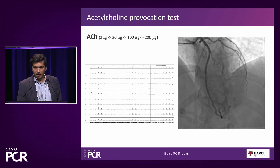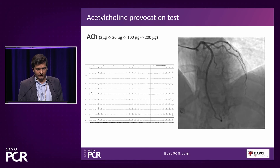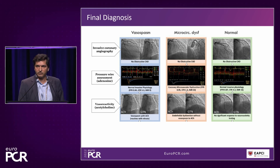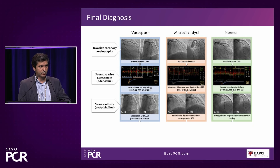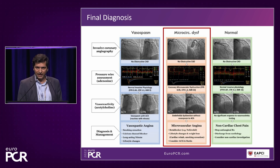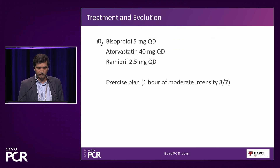We then did the provocation test with acetylcholine, which was normal — no changes in arterial constriction or ECG, and no pain induced. Looking at the different presentations that non-obstructive disease can have: vasospasm on one side and microvascular disease on the other. In this case, what we had was clearly microvascular dysfunction with normal coronary arteries, low CFR, elevated IMR, and a negative vasospasm test. The evidence suggests the patient can improve with beta blockers, statins, ACE inhibitors, and lifestyle changes.